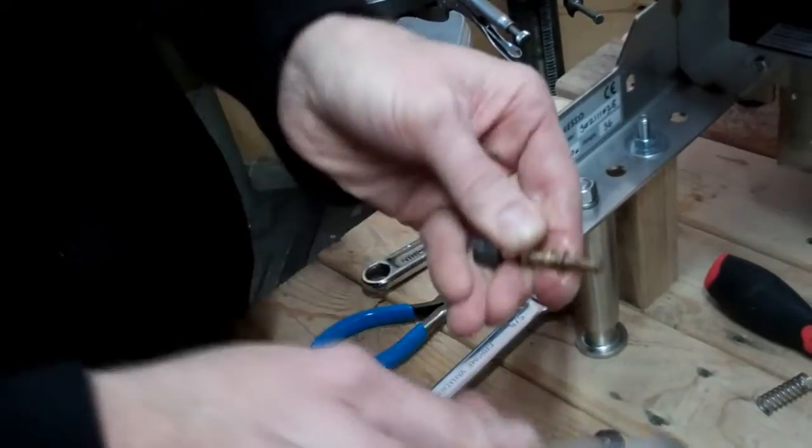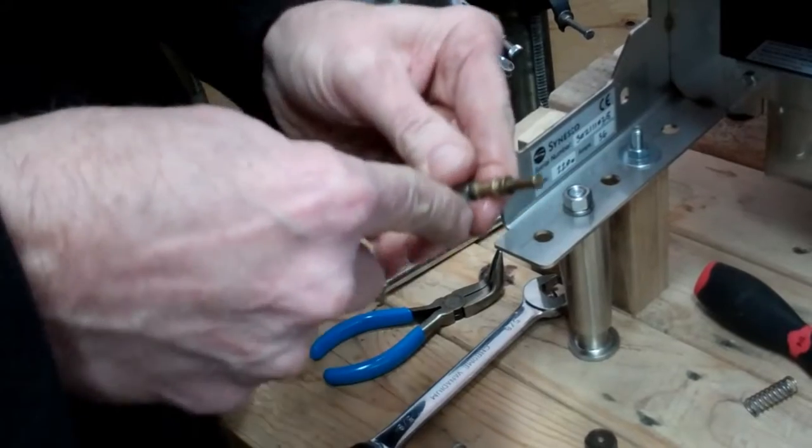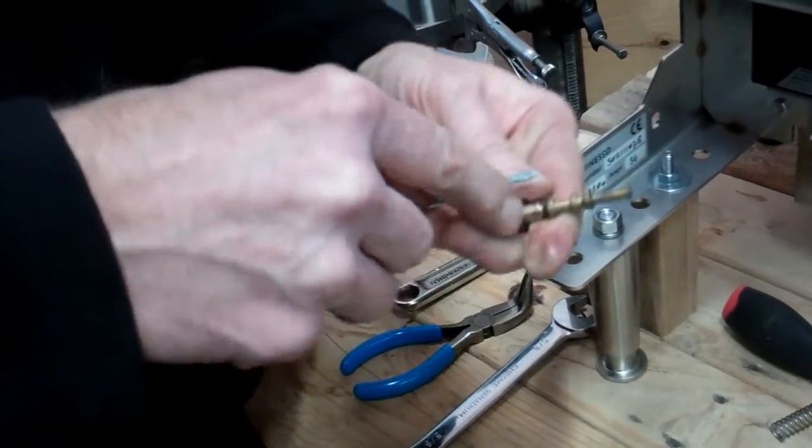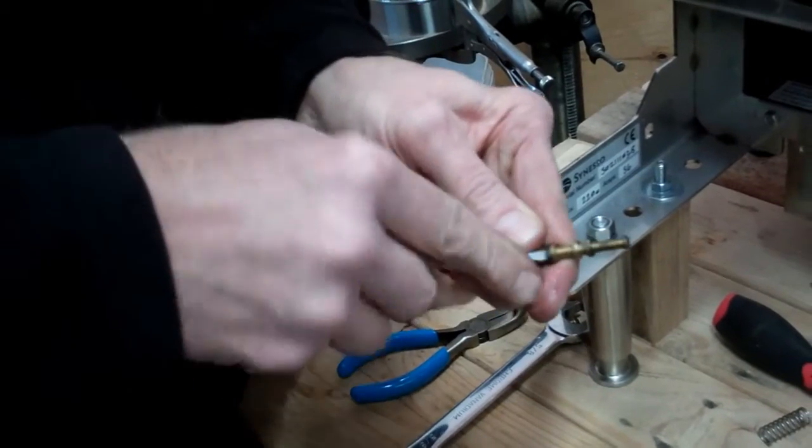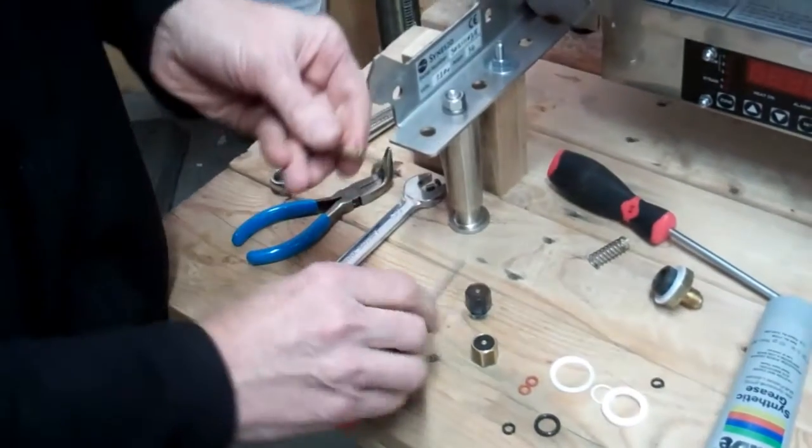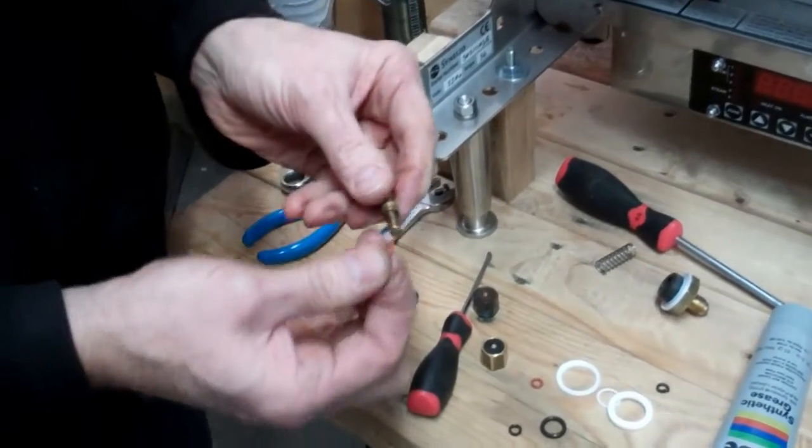With the steam valve pusher, the O-rings will be removed. I often just break them to get them off. And then we put the new ones on.